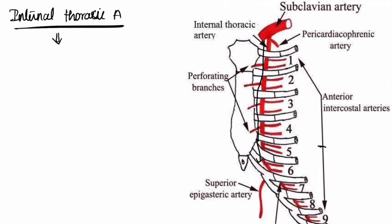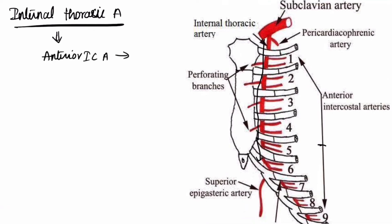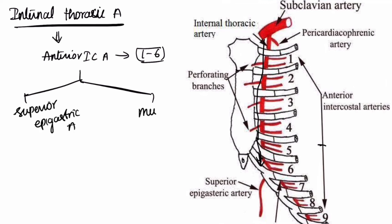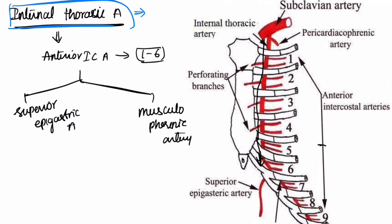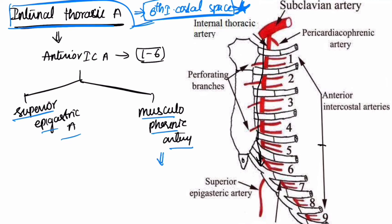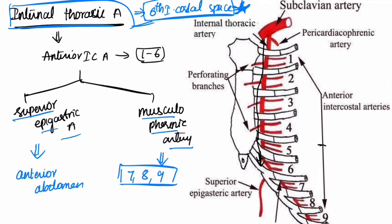The internal thoracic artery gives rise to anterior intercostal arteries supplying the first to sixth intercostal spaces. At the sixth intercostal space, it terminates — this is an important point to note — dividing into two branches: the superior epigastric artery and the musculophrenic artery. The musculophrenic artery supplies the remaining seventh, eighth, and ninth intercostal spaces, while the superior epigastric artery descends into the anterior abdomen and has no role in the thorax.